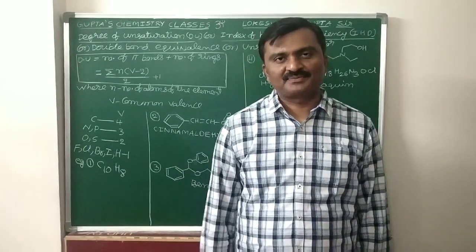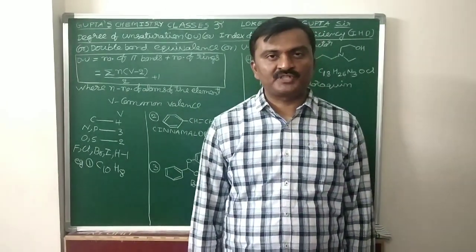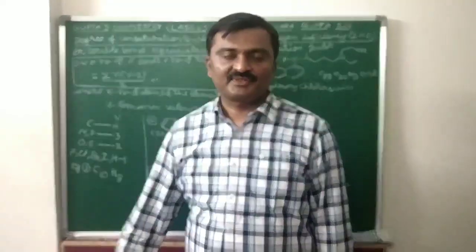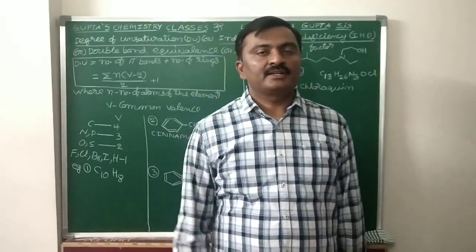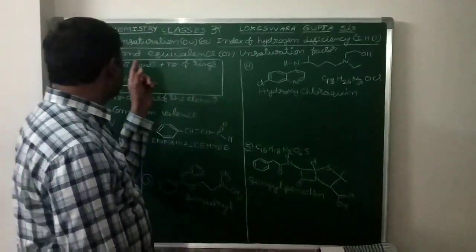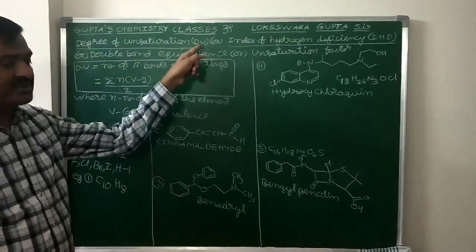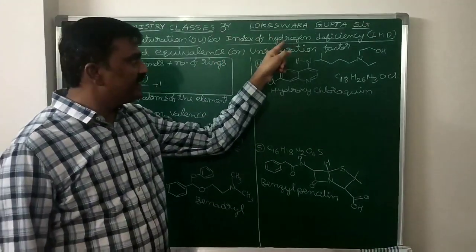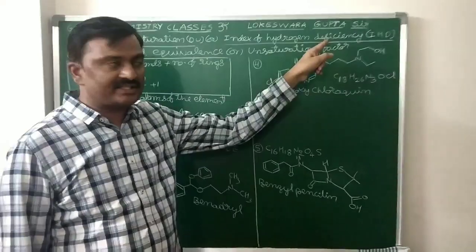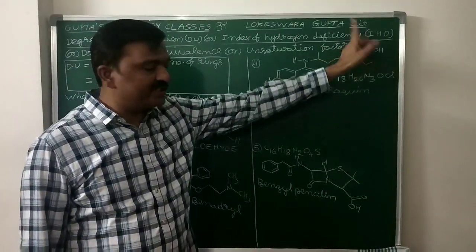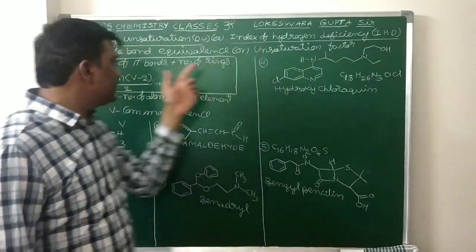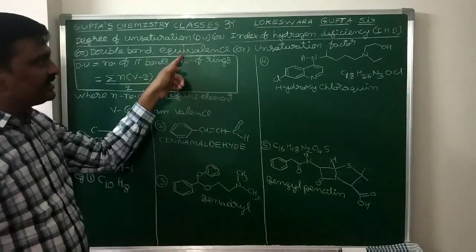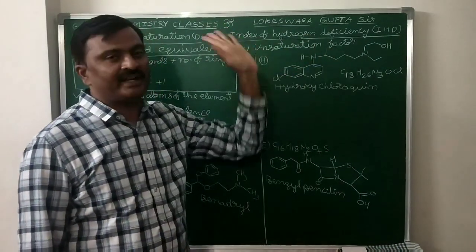Hi students, welcome to my YouTube channel Gupta's Chemistry Classes. Today my topic is degree of unsaturation. This degree of unsaturation is also called index of hydrogen deficiency, IHD. Another name is double bond equivalence, and it is also called unsaturation factor.